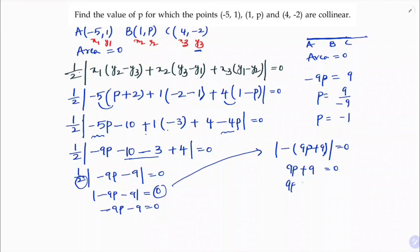So 9p equals minus 9, and p equals minus 9 divided by 9. Therefore, the value of p is minus 1.